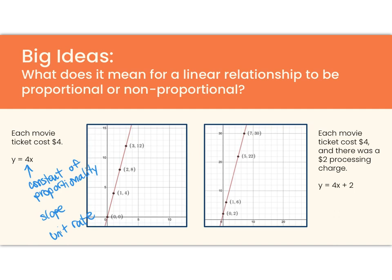In the graph on the right, my slope is 4 here, too, because the movie tickets still cost $4. So each movie ticket costs $4, and there was a $2 processing charge also, because I paid online with my credit card. So now my equation is y equals 4x plus 2. So this time my slope is not equal to my unit rate. I do not have a constant of proportionality for this graph.